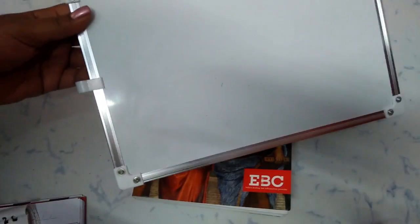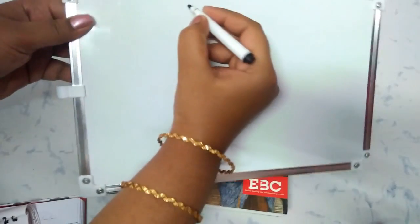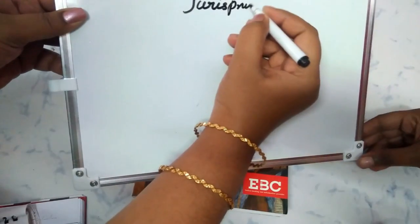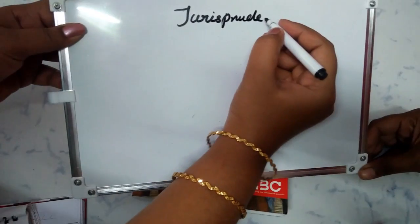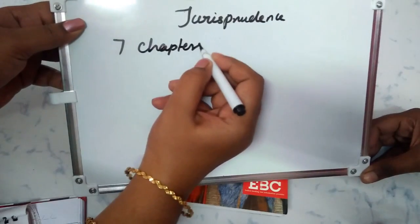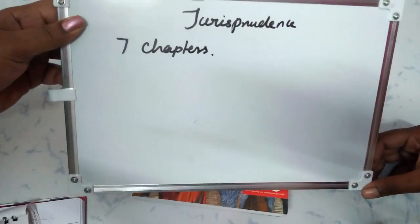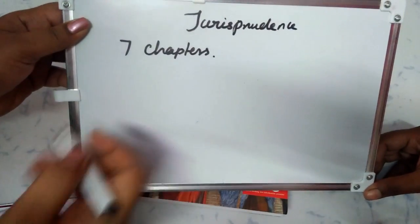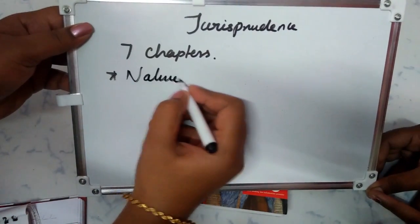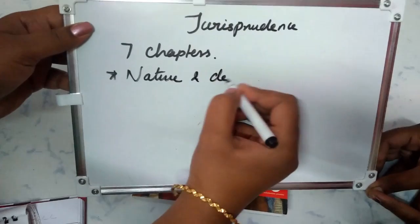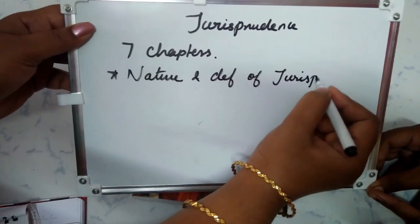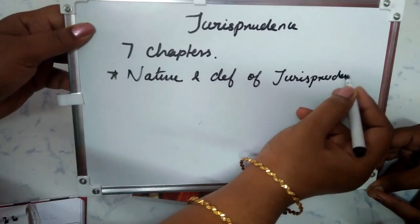So in total, there are 7 chapters in the book. The first chapter is nature and definition — the definition of jurisprudence. The outline is available in the description box, so you can check it there.